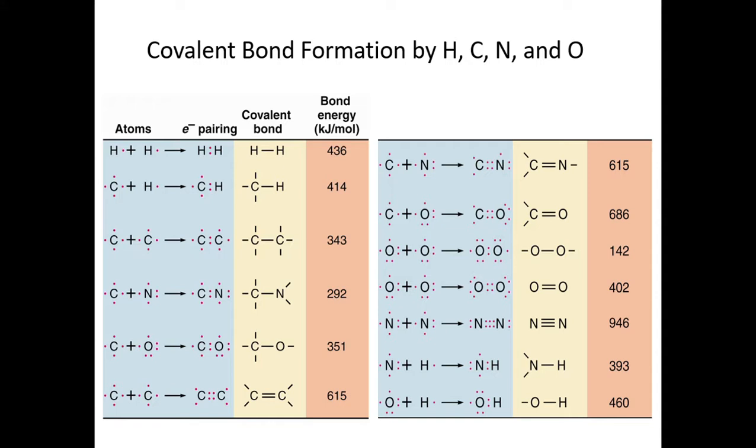The weakest bond is going to be the single bond. Double bonds are going to be a little stronger, triple bonds even stronger. And we can see that reflected in the bond energy, which by definition is the amount of energy required to break Avogadro's number of molecules, or one mole of molecules, into their individual atoms.